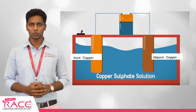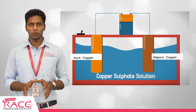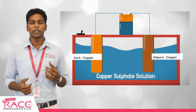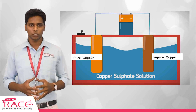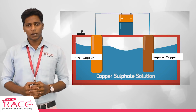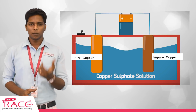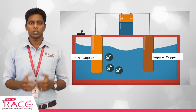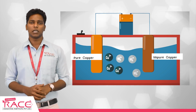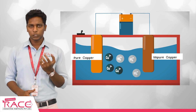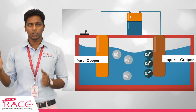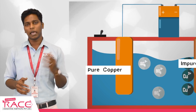When electricity is passed through copper sulfate solution, it dissociates into Cu²⁺ and SO₄²⁻ ions. The Cu²⁺ ions move toward the cathode because positive and negative charges attract each other. This is the anode side process.